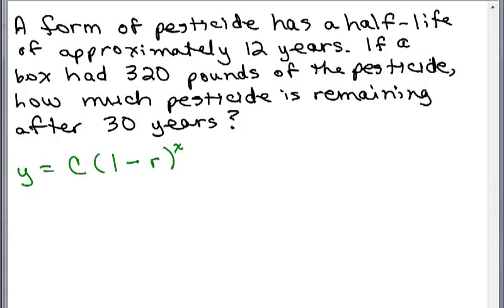So here's our problem again and this is a decaying problem. There's going to be less pesticide and we have the formula here. So we need to state C, R, and X. C is the number of pounds we have at the beginning, which is 320. R, how fast is it decaying? We're talking about half-life, that's 50%, which is 0.5. And the trickiest one for most people is the time interval or X, and we do that by taking the total number of years, 30, divided by what one time period is. Each time period is 12 years, so we divide 30 by 12 to get the 2.5.